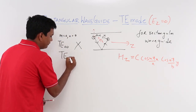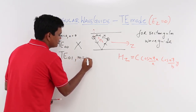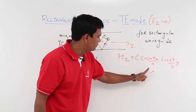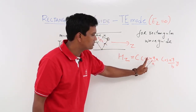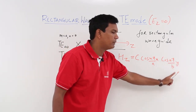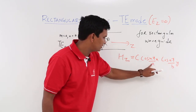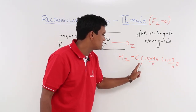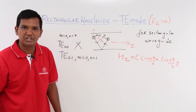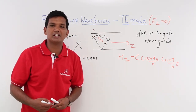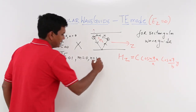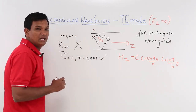What about TE(0,1)? It means m equal to 0 and n equal to 1. With m equal to 0, the cosine term becomes 1, and with n equal to 1, we get cos(πy/b). So Hz = C · cos(πy/b), which is harmonic in nature. If magnetic field is harmonic, it means it is time-varying, and it will produce an electric field. So TE(0,1) will exist.